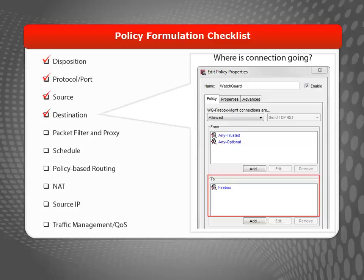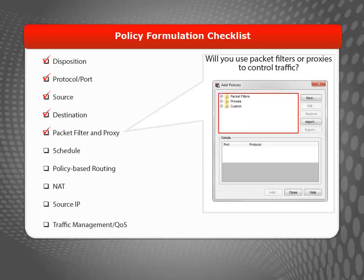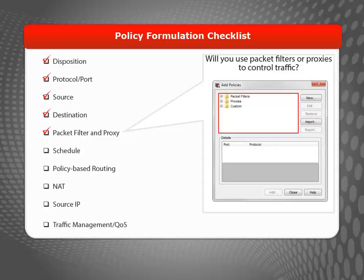Your device uses two categories of policies to filter network traffic: packet filters and proxies. A packet filter examines each packet's IP and TCP/UDP header. If the packet header information is legitimate, the device allows the packet; otherwise, it drops the packet. A proxy examines both the header information and the content of each packet to make sure connections are secure — this is also called deep packet inspection. If the packet header information is legitimate and the content is not considered a threat, the device allows the packet; otherwise, it drops the packet.